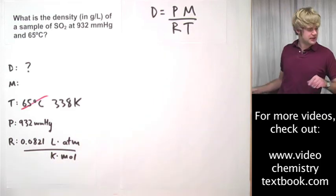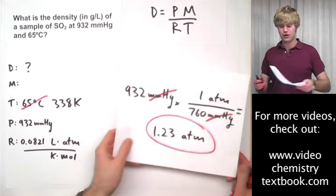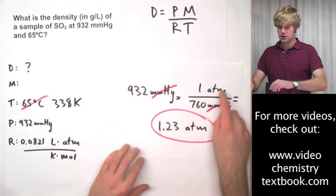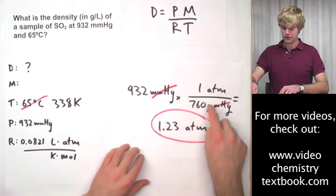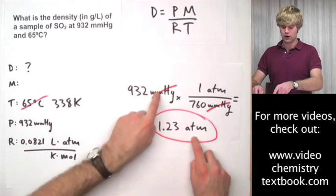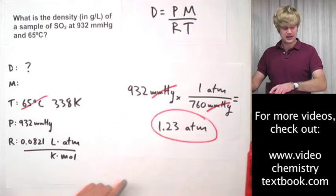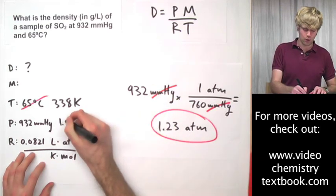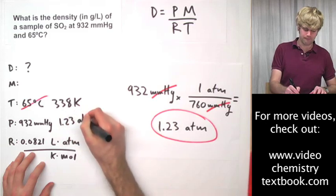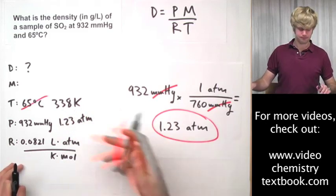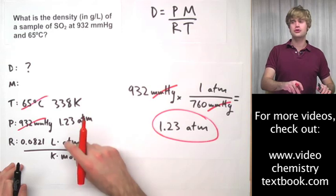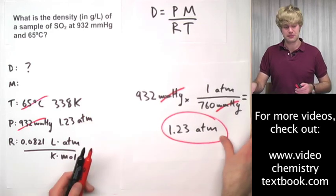So that means that I'm going to have to take my pressure, multiply it by a conversion factor in order to convert from millimeters of mercury to ATM. So when I do that, I get 1.23 ATM. Now the pressures match and I'm set with that.